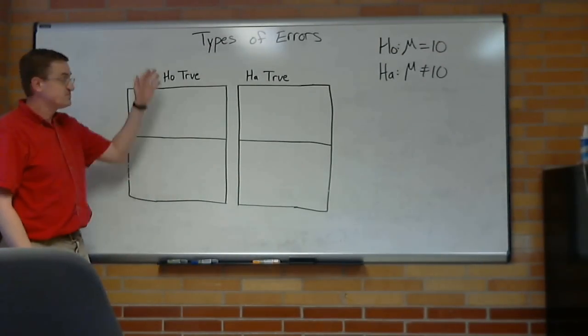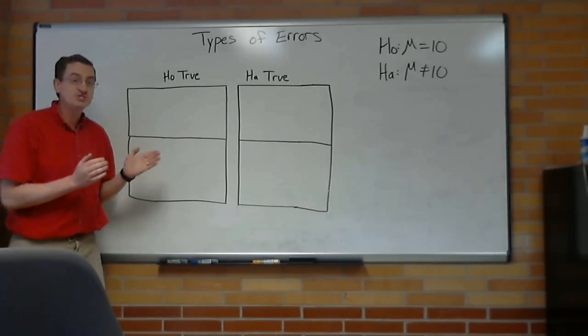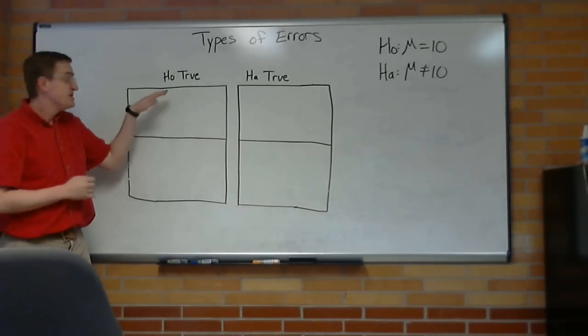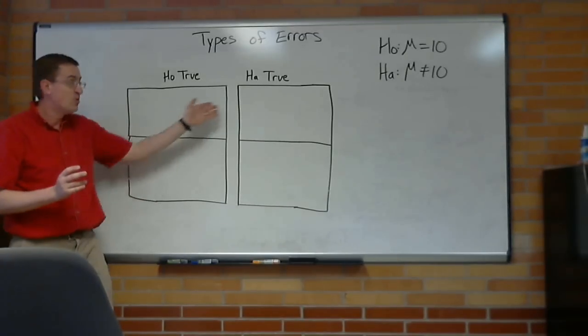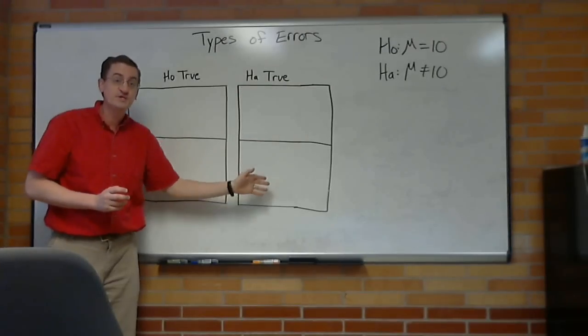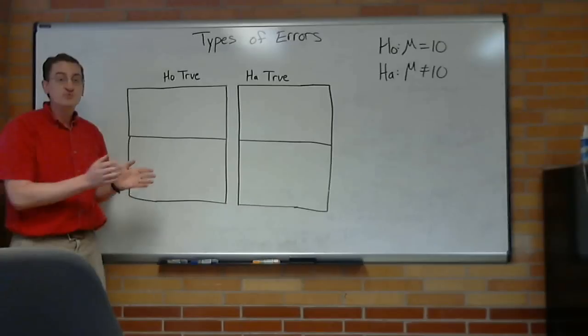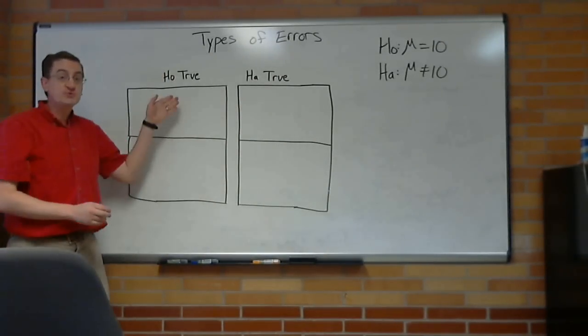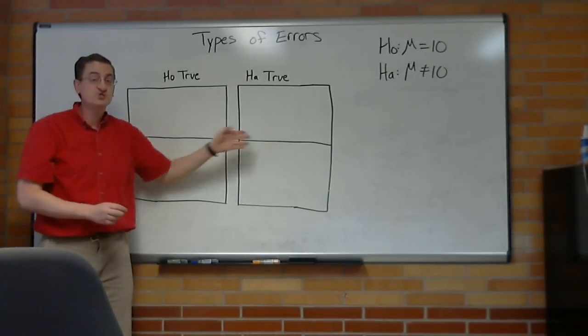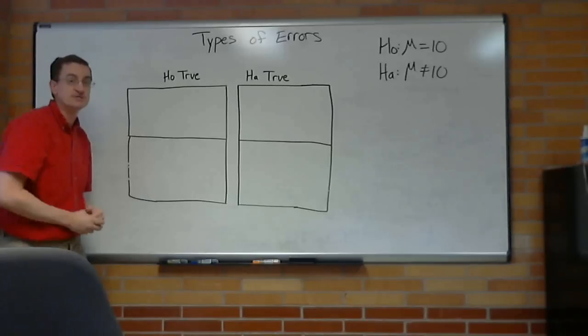Now, the reason that matters is because we have two different scenarios, and you cannot jump between one universe and the other. Either the null is true, and it's always true, it is the truth. Or, the alternative is what is the truth, it can't be one or the other.